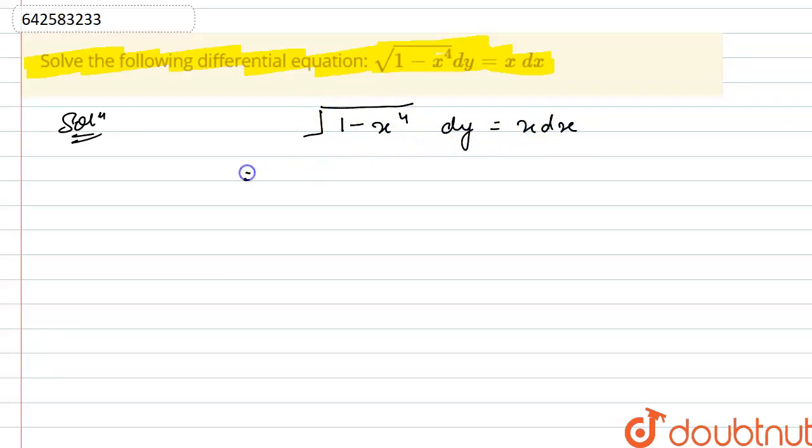Now on separating the variables, what we will get is dy is equal to x divided by root over of 1 minus x raised to the power 4 dx. Now for solving this, what we will do is simply integrate both the sides.